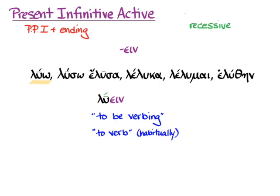That means to be verbing or to verb more than once or habitually. With tense for infinitives, what you're thinking about is only aspect. This is continuous aspect. Time doesn't come into it with infinitives and tense, only aspect. The present infinitive has continuous aspect, and these translations to be verbing or to verb repeatedly or habitually indicate that continuous aspect.